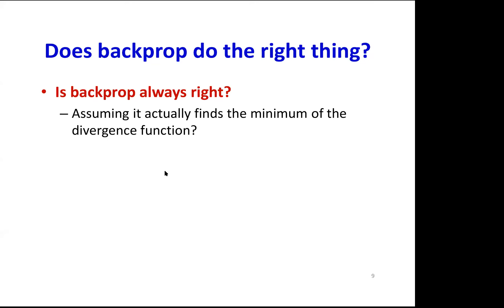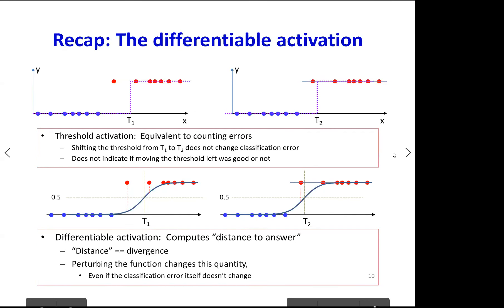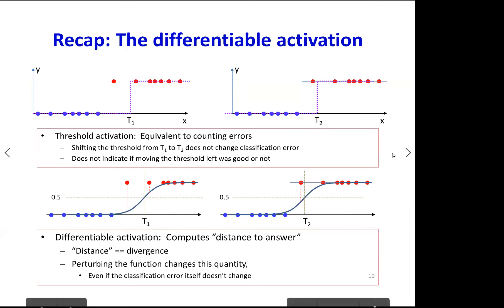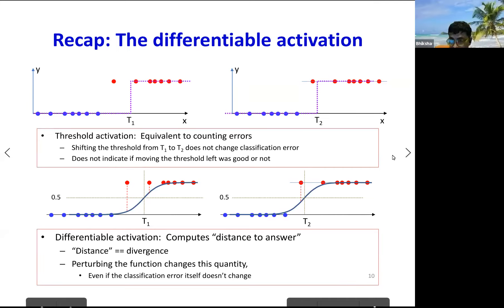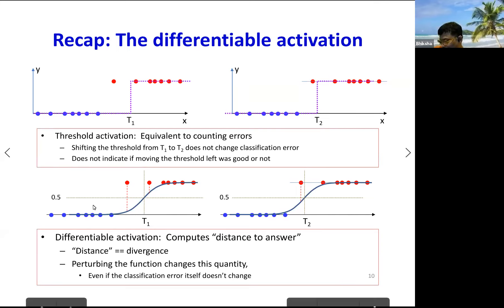Not necessarily. Even if you minimize the empirical risk, the true risk may not minimize classification error. The answer is no. Recall what we said about differentiable activations — when we used a threshold activation and computed the difference, we were counting the actual error. The issue is that classification error is not a smooth function of weights.